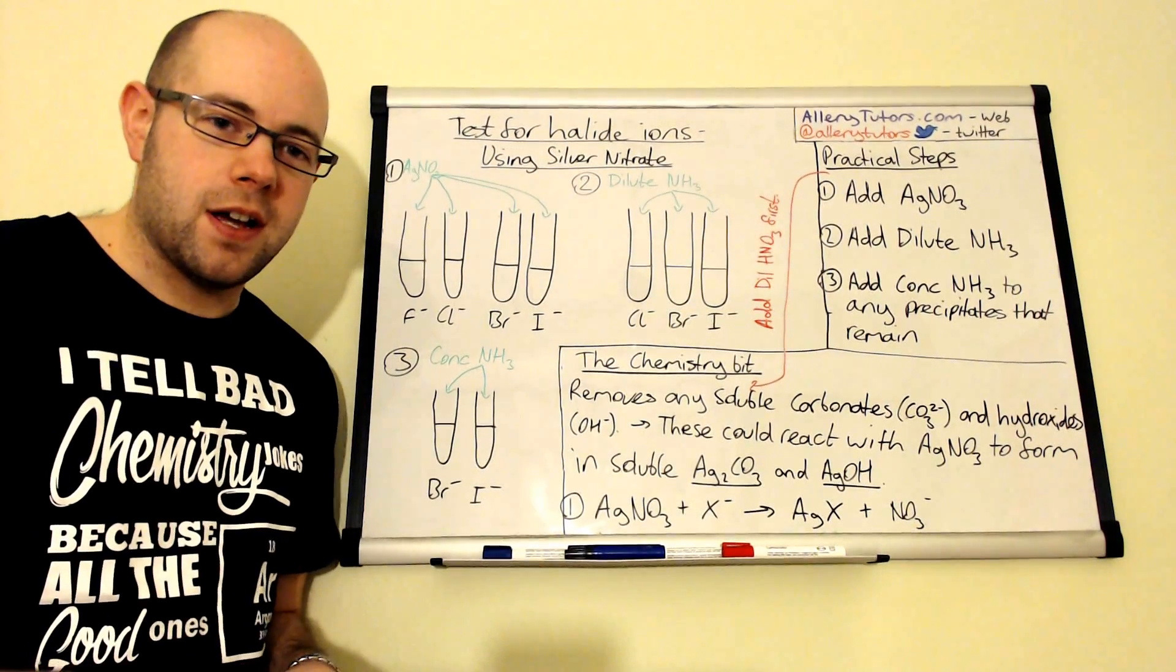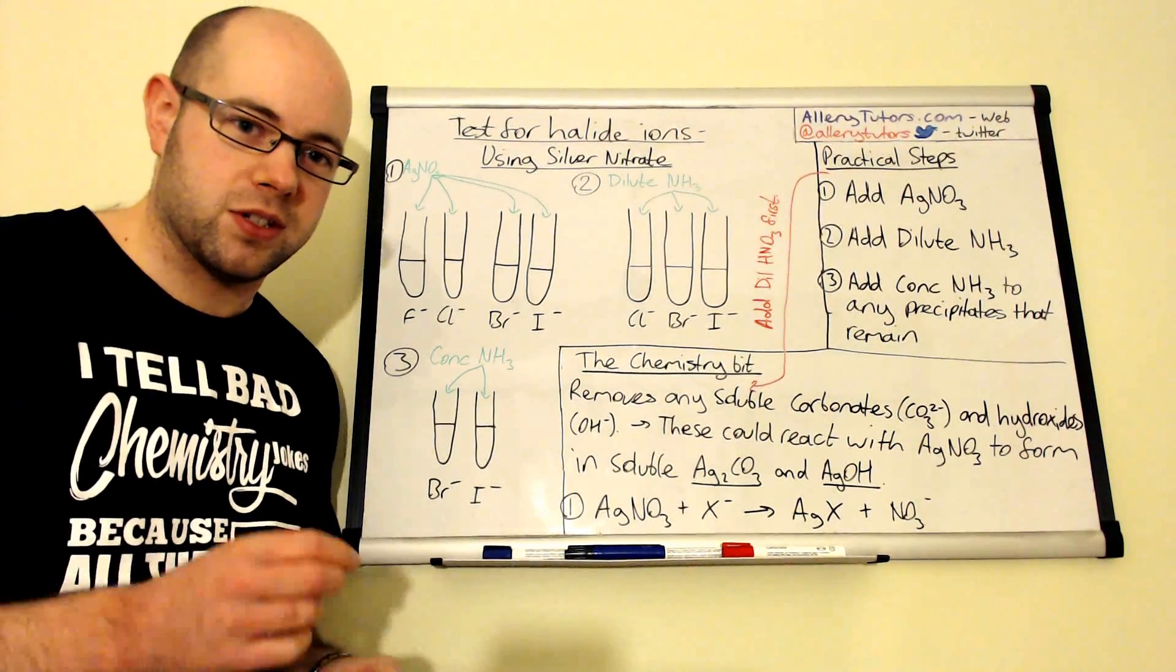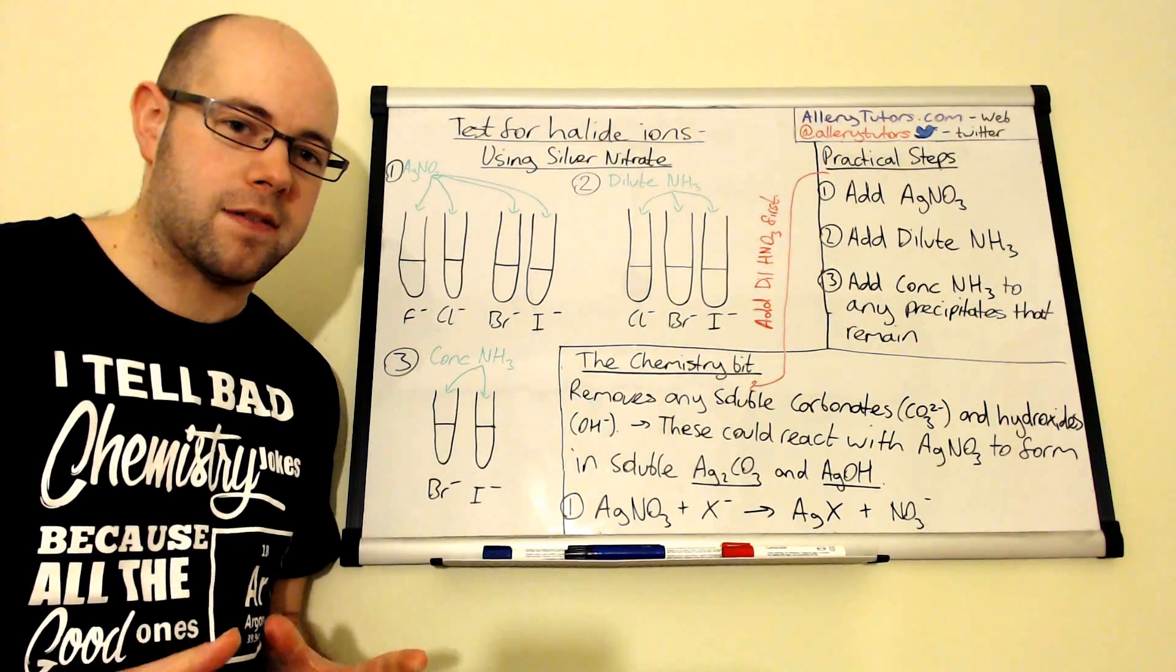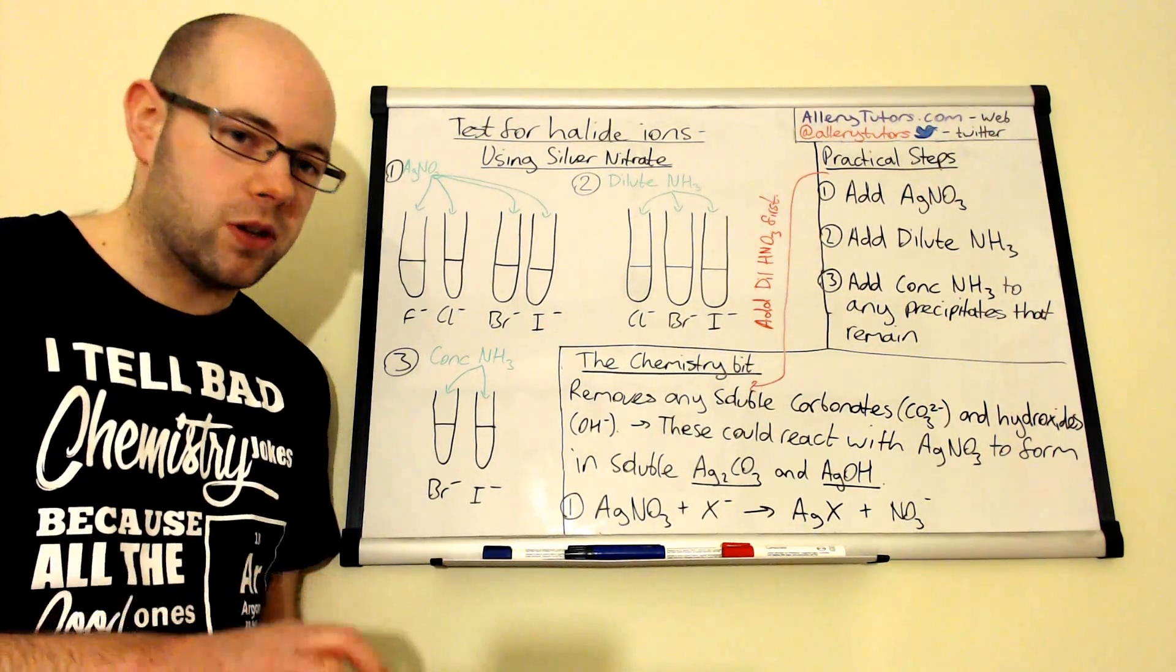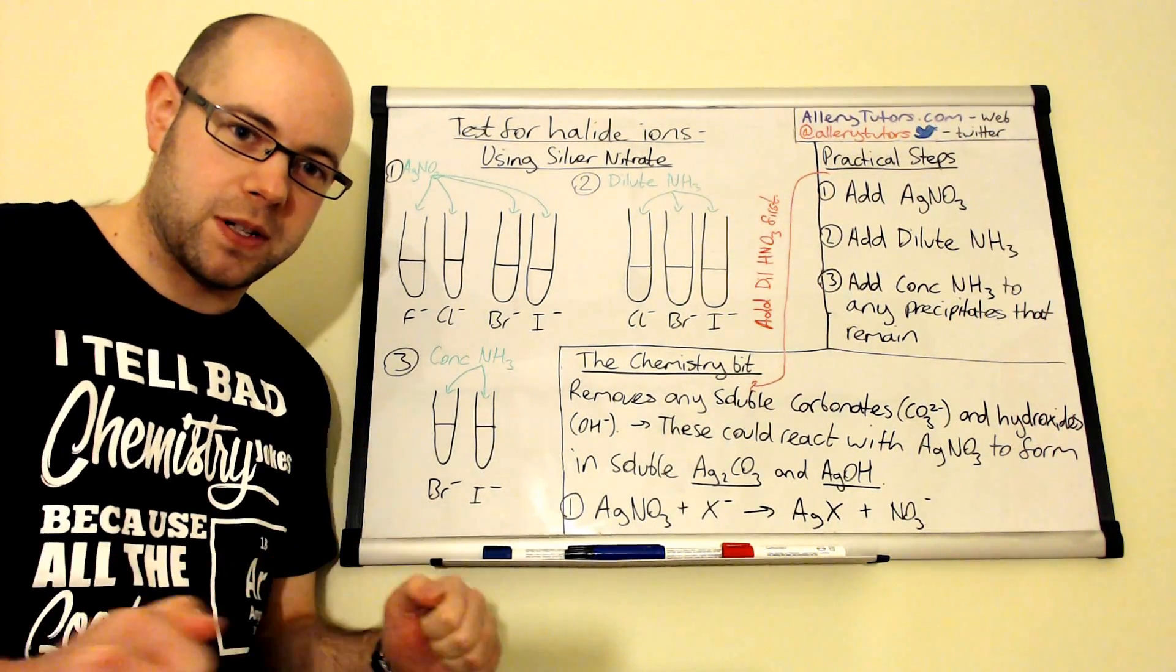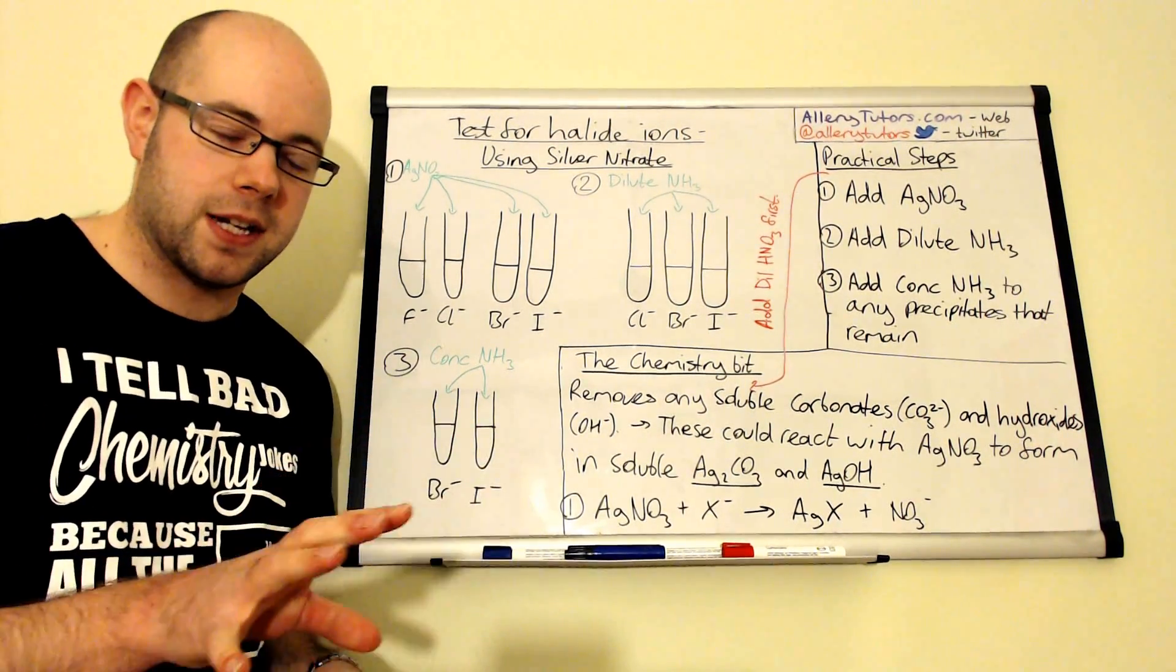These ions actually come about from dissolving the salt that they belong to. For example, Cl minus ions you can get from dissolving sodium chloride in water.